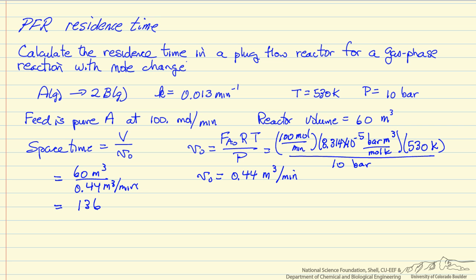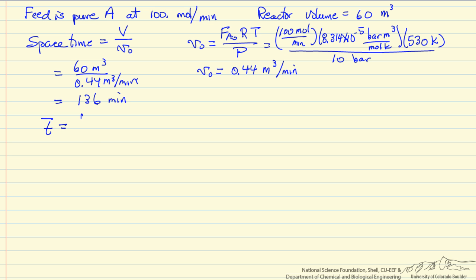This space time would be the residence time in the reactor if there were no mole change, no pressure drop, and it was constant temperature. Now we want to calculate the actual residence time in the reactor. The residence time is going to be an integral where the volumetric flow rate in the denominator is changing as we move down the reactor, so we integrate over the reactor volume from the inlet to the outlet.